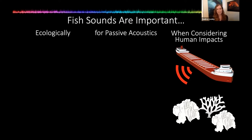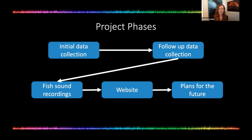Fish sounds are also important when considering human impacts. The production and detection of fish sounds can be impeded by anthropogenic impacts such as habitat degradation, changing climatic conditions, and noise pollution. As we gain awareness of the number of fish species that use acoustic cues, the potential impacts of human activities becomes more pressing. It has been difficult to assess population and community level effects of human activities on fish sound production due to a need to understand more completely how prolific fish sound production really is, and the when, where, and why it happens. So along with collaborators, the goal was to address these critical gaps, and this project came about in phases.